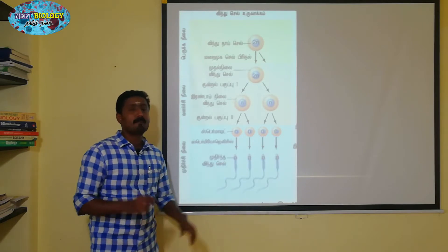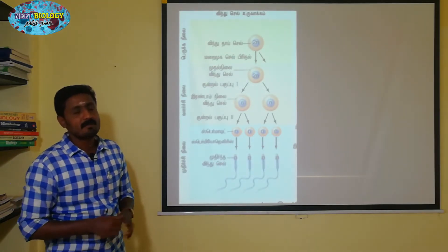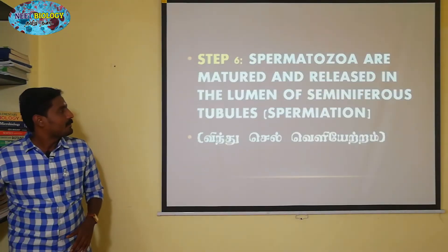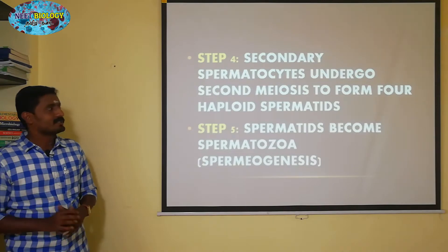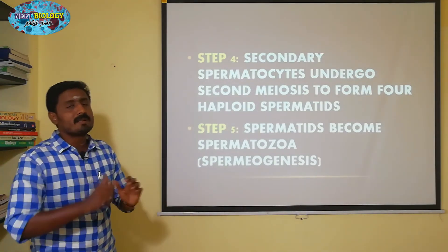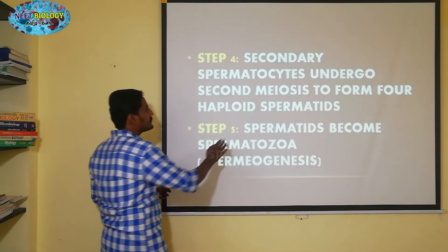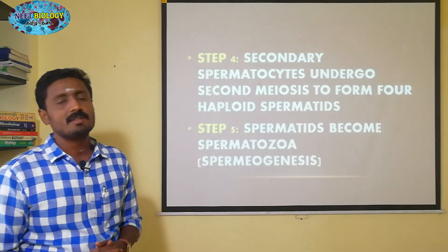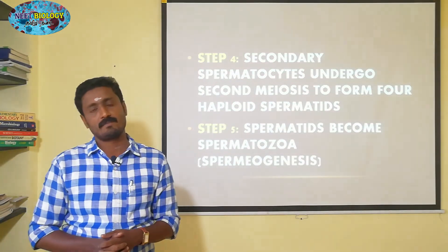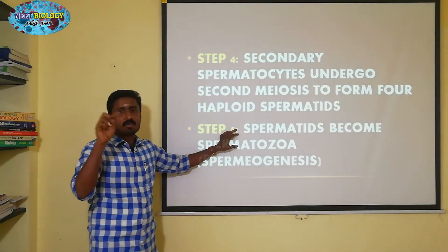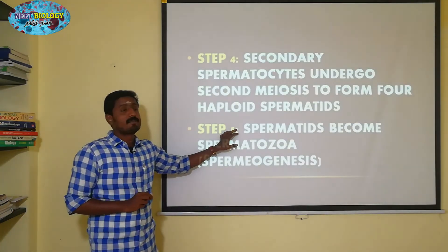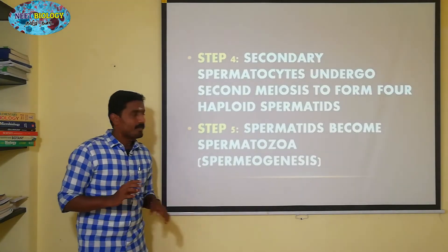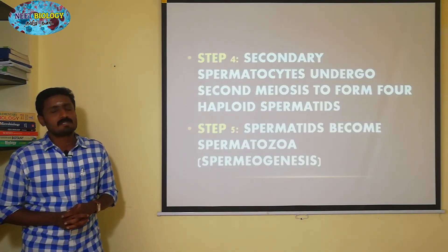What is the name? Matured sperm cells. Spermatids undergo Spermiogenesis and become Spermatozoa. Spermatozoa is a mature sperm cell. After maturity, the spermatid is called Spermatozoa.